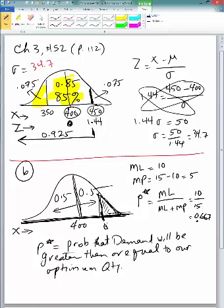So, our optimum quantity that we're looking for, Q-star, cannot be greater than the mean, cannot be here.